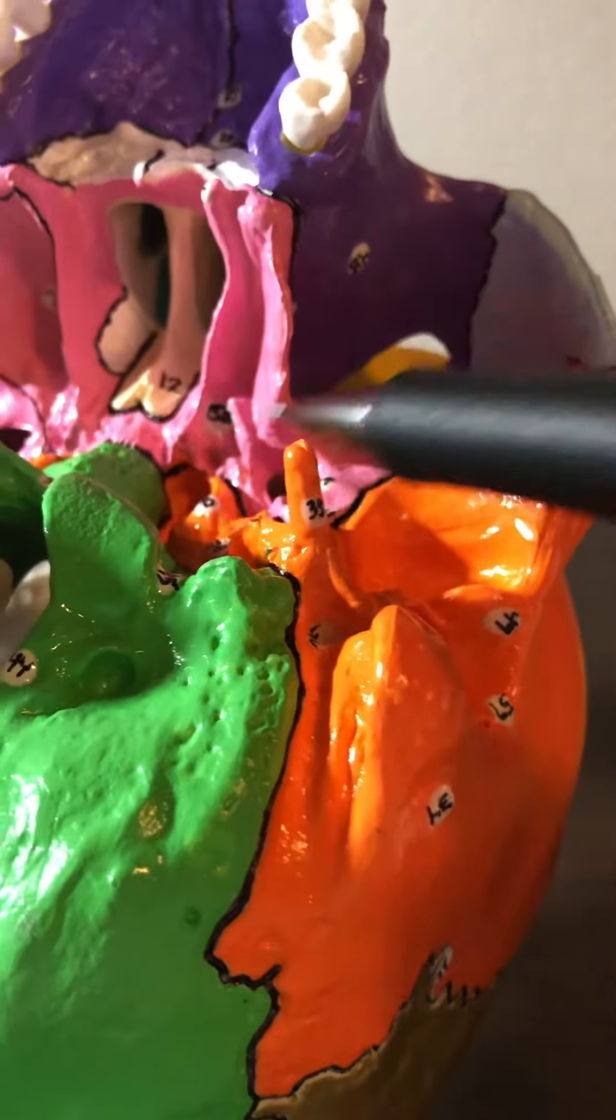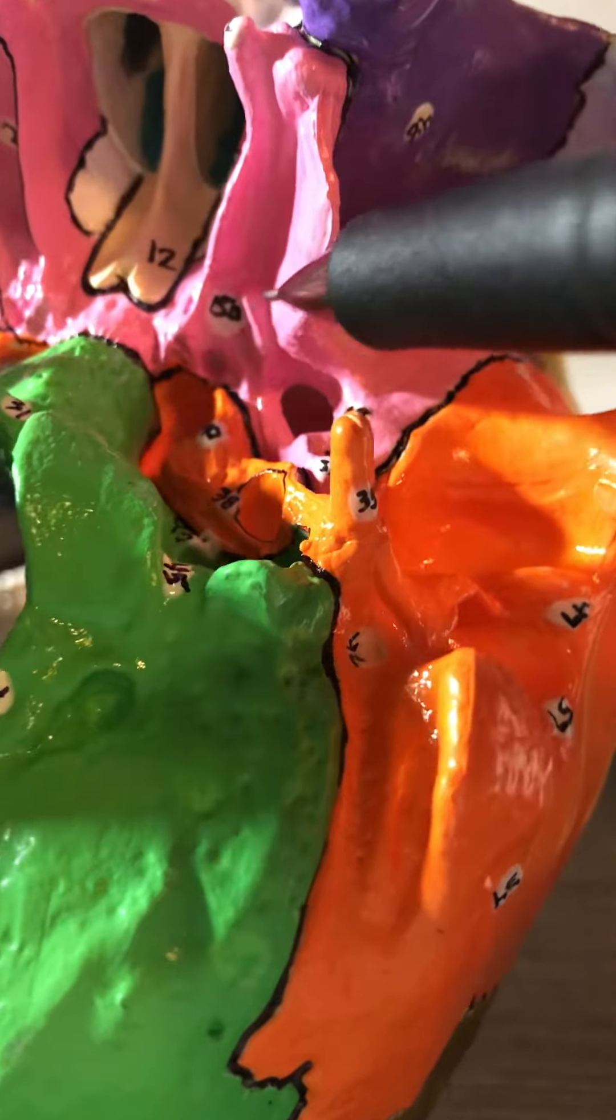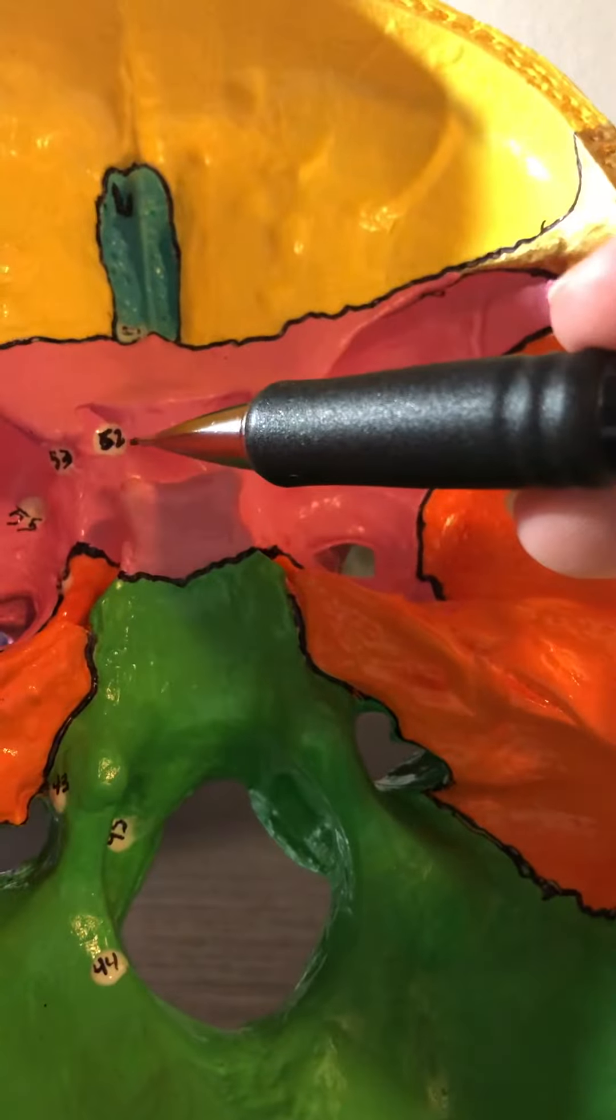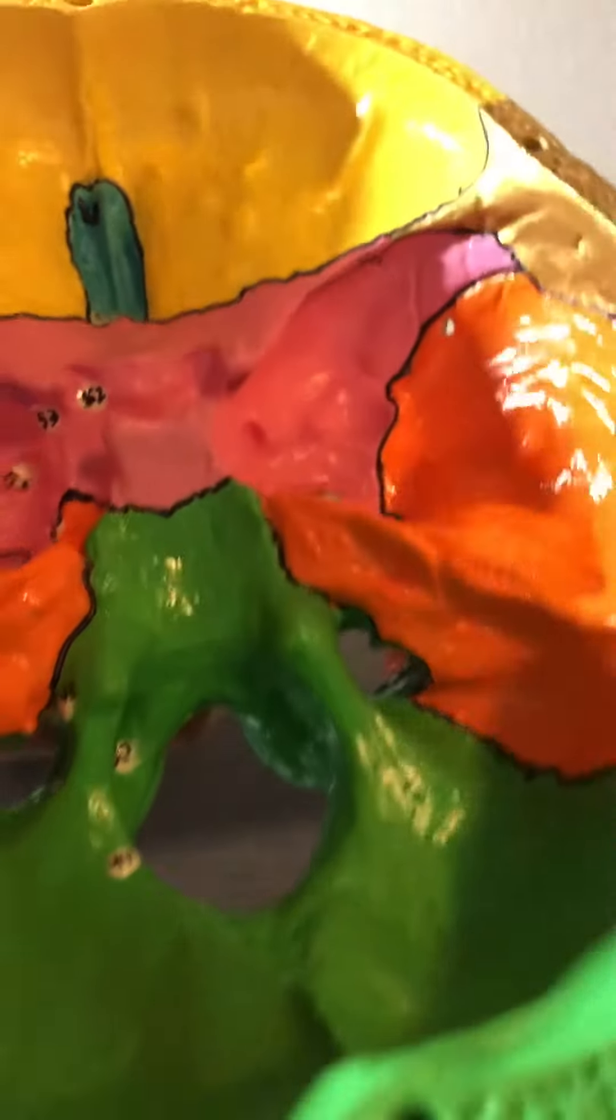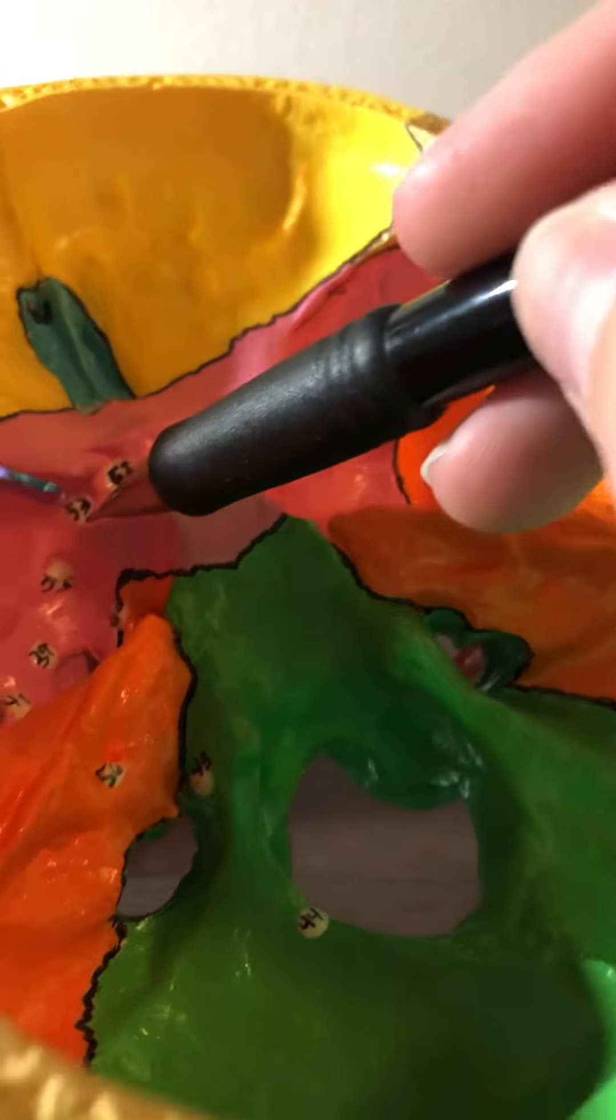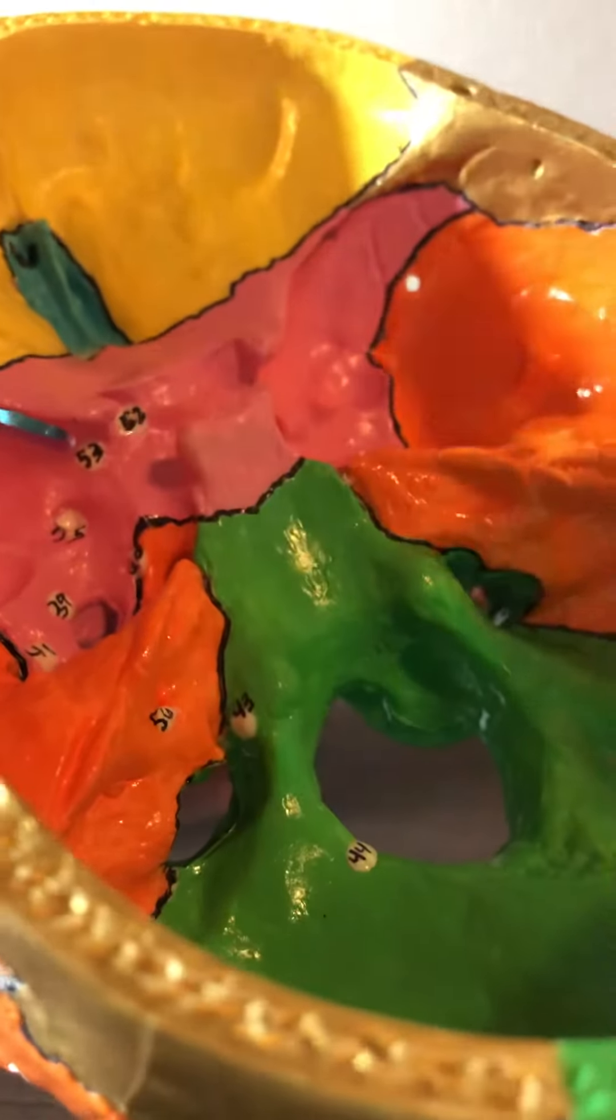Number 50 is the pterygoid canal. Number 51 is the olfactory foramina. Number 52 is the optic canal foramina. Number 53 is the superior orbital fissure. Number 54 is the superior orbital fissure.